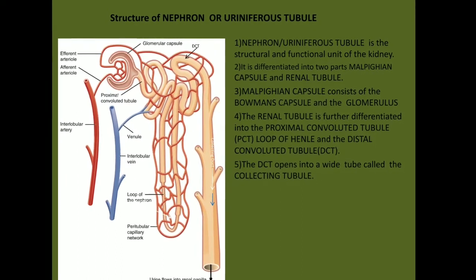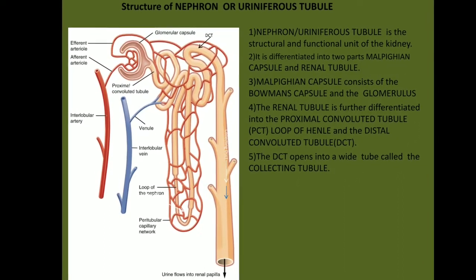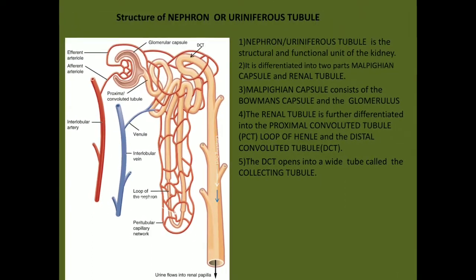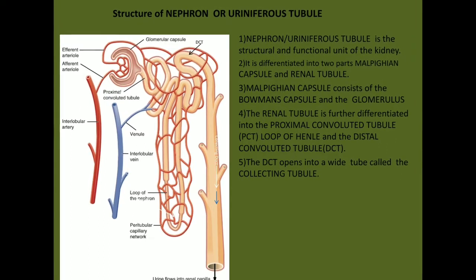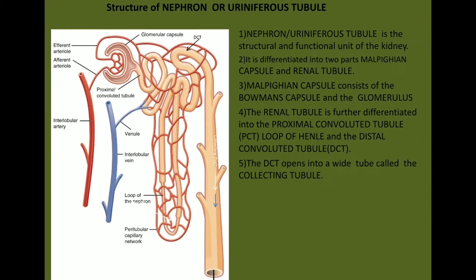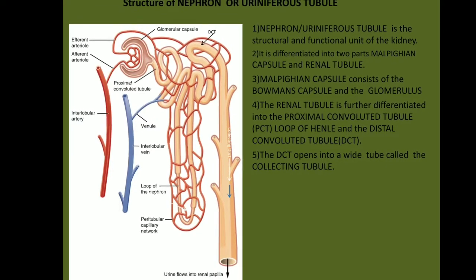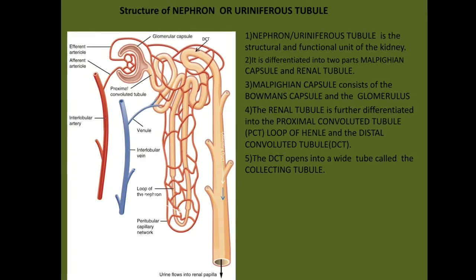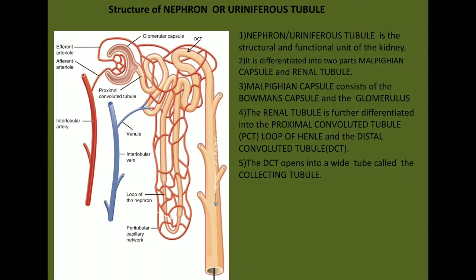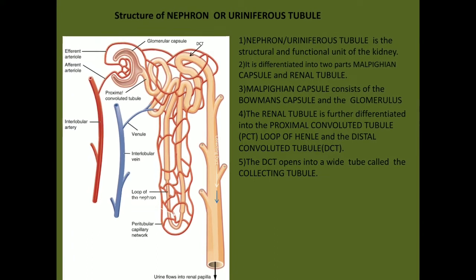The renal tubule is further differentiated into the proximal convoluted tubule (PCT), which lies close to the Bowman's capsule and is called convoluted because it is thrown into a number of folds. Next lies the hairpin loop known as the loop of Henle, and then the distal convoluted tubule (DCT). The DCT lies away from the Bowman's capsule and opens into a wide tube called the collecting tubule. The Malpighian capsule, PCT, and DCT lie in the cortex, whereas the loop of Henle lies in the medulla.